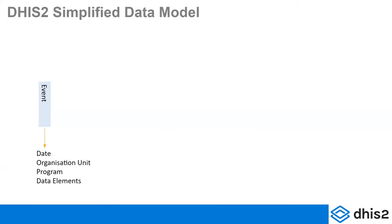I wanted to show a very simplified way of thinking about the DHIS2 data model. If you think of an event as the smallest level of data entry — it's very simple. An event is something that occurs on a specific date at an organization unit within a program. For example, you've decided you're collecting information about ART and you have certain data elements, certain questions you're asking about that ART event. These events can be repeated over time or can be a single event. They are not linked — they are just information gathered about an event occurring at a location, at a date, in a program.